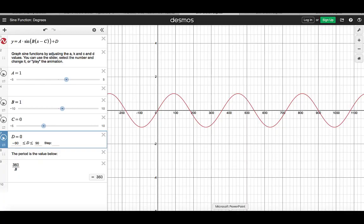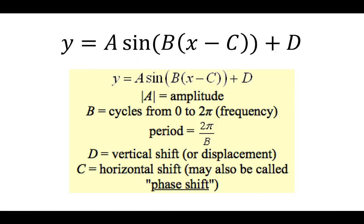Let's summarize all these observations. The transformational form of the sine function is A times sine of the quantity B times the quantity x minus C, plus D. Using this transformation, we can find the height of the wave, how many cycles per period are in the graph, whether the graph is translated to the right or to the left, and whether the graph is translated up or down.